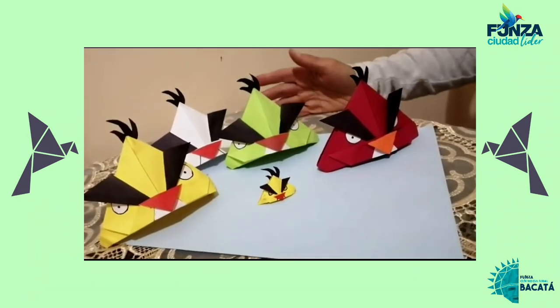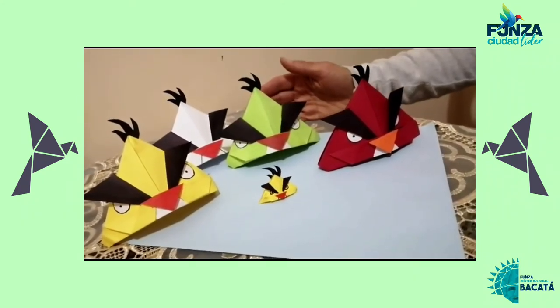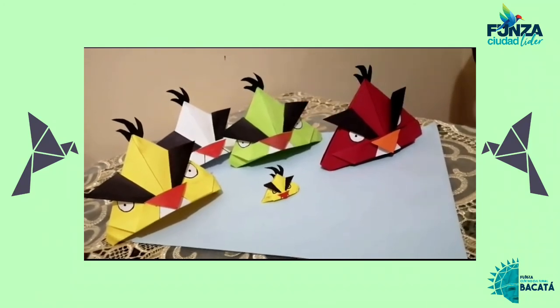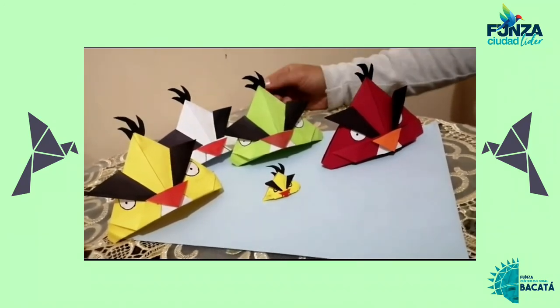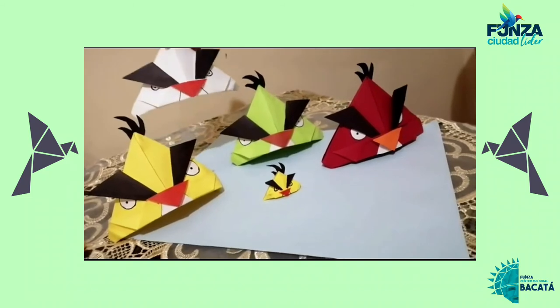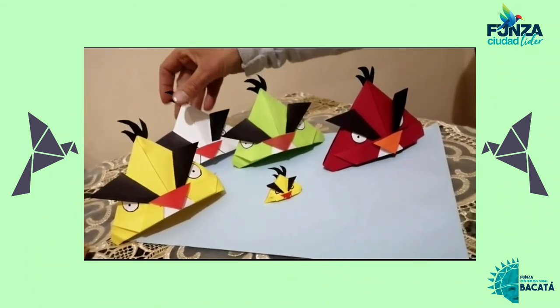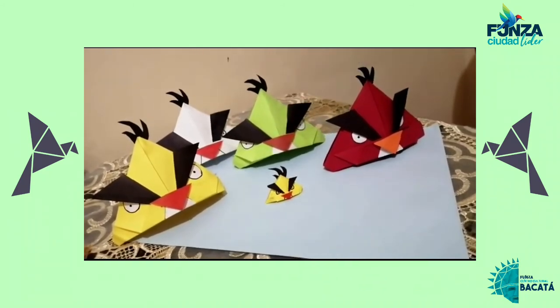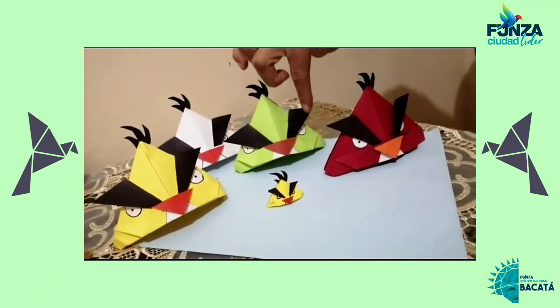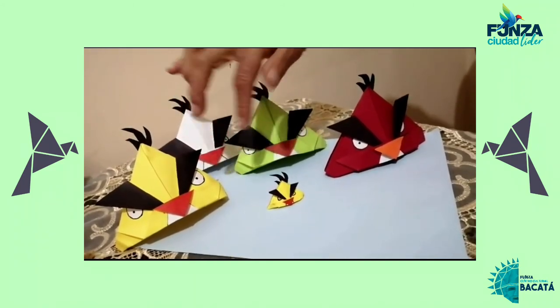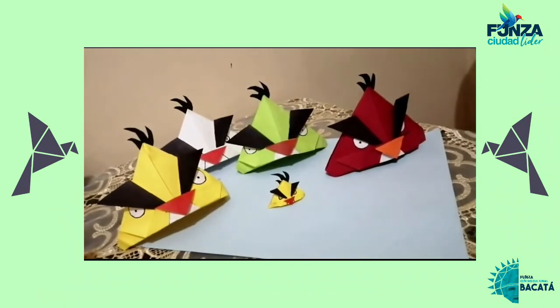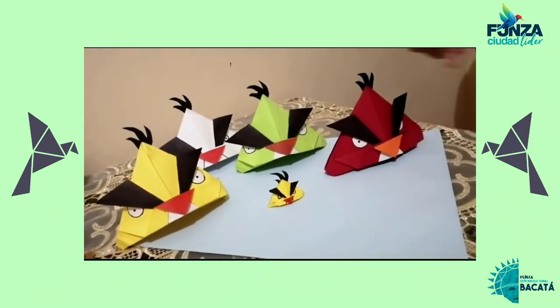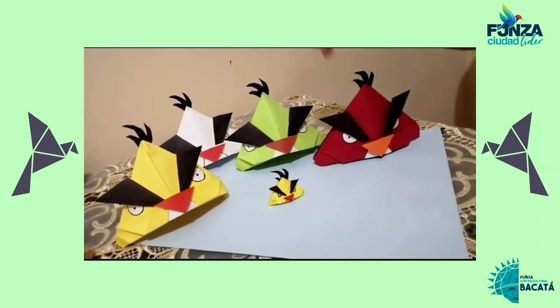Estos son los Angry Birds que realicé en papel iris, en rojo, en verde, amarillo. A diferencia de estos blancos que debemos pintarlos, aquí se debe coger, sacar circulitos para hacerle los ojos, igualmente sacar aquí los colores naranjas de la nariz y la parte de abajo de la boca y el pelito de arriba.